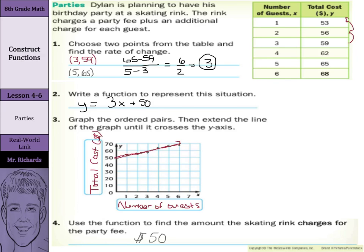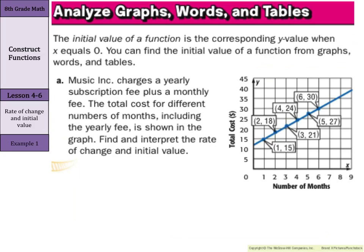Let's continue on. To analyze graphs, words and tables: the initial value of a function is the corresponding y value when x equals zero, our y-intercept. You can find the initial value from graphs, words and tables. Music Inc. charges a yearly subscription fee plus a monthly fee. The total cost for different number of months including the yearly fee is shown in the graph. Find and interpret the rate of change and initial value.